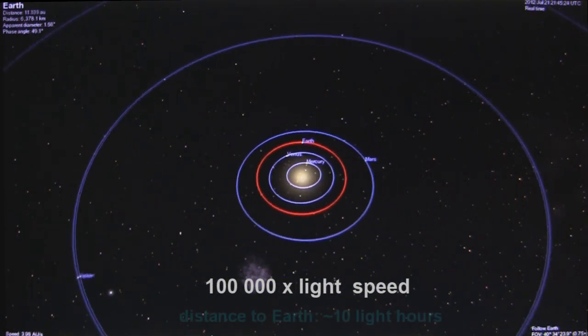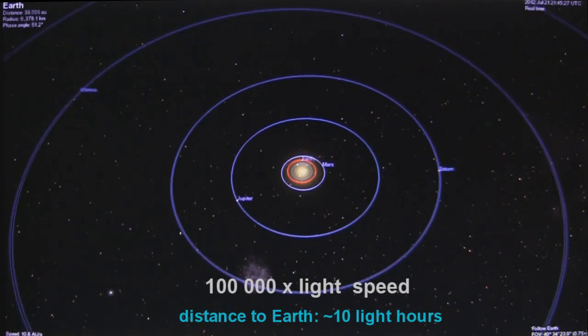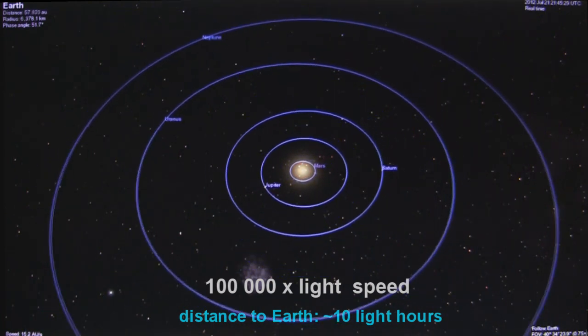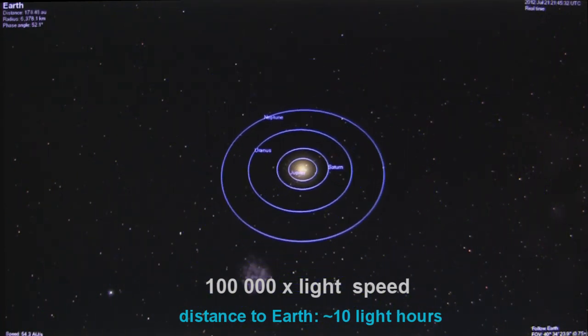100,000 times the speed of light. This is now about the distance to Voyager 1. The furthest man-made object. Nearly some half light day out into space.